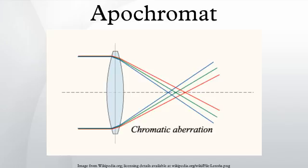Chromatic aberration is the phenomenon of different colors focusing at different distances from a lens. In photography, chromatic aberration produces soft overall images and color fringing at high contrast edges, like an edge between black and white.